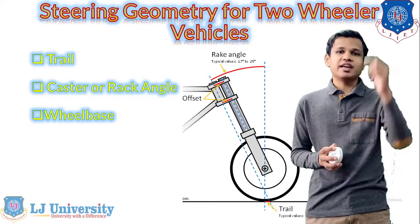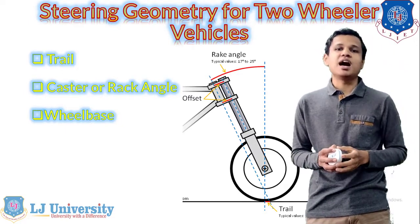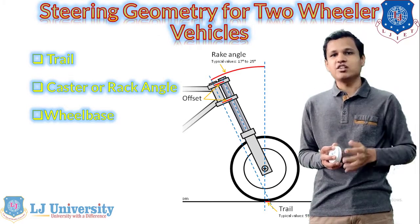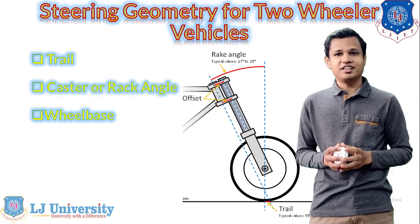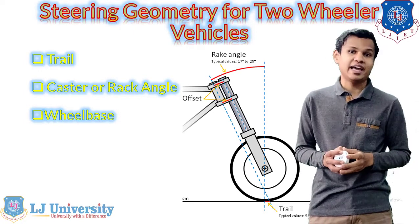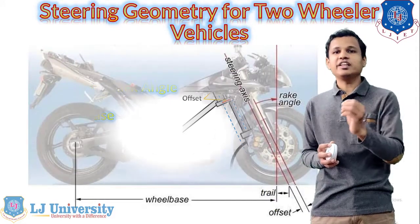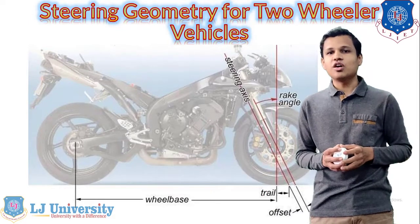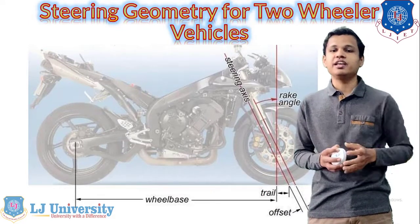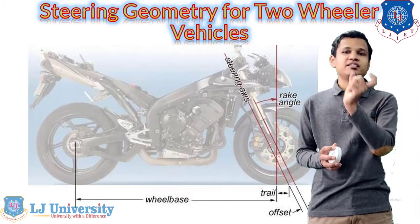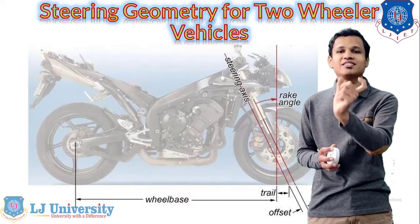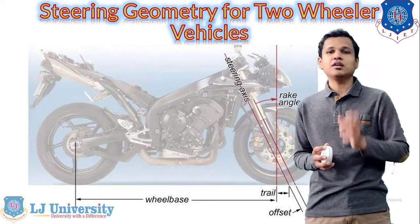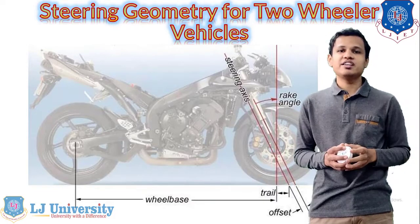The caster angle is the angle made by the steering axis with the vertical center line of the tire — that is known as the caster angle, also known as the rack angle. For the rear motorcycle, the trail is the distance between the two intersecting points of the steering axis and the vertical center line with the road surface.